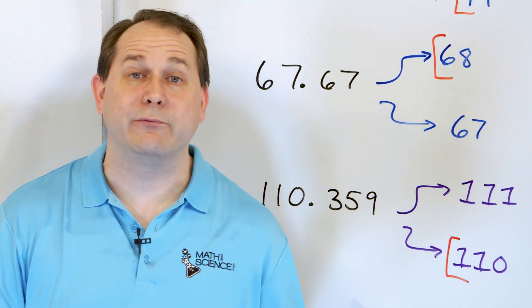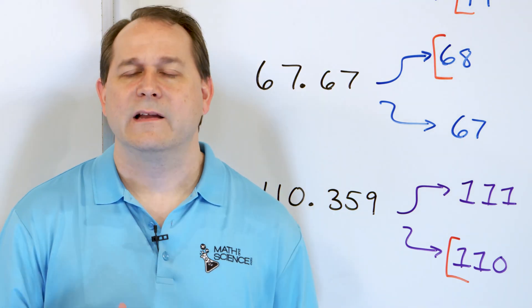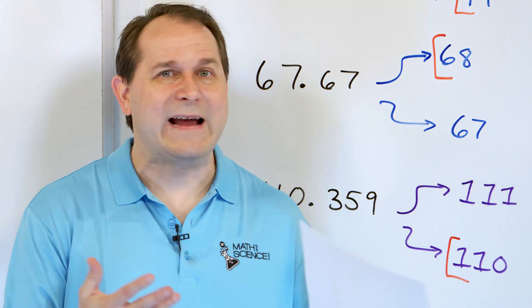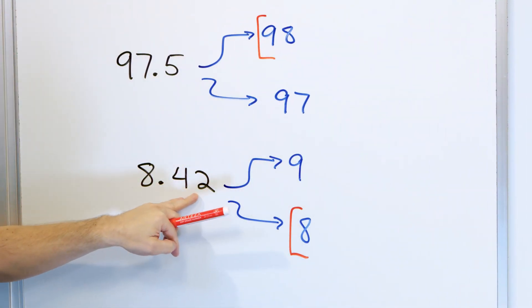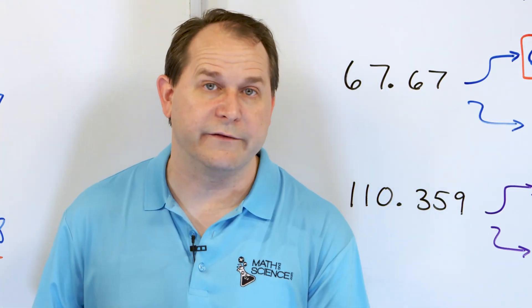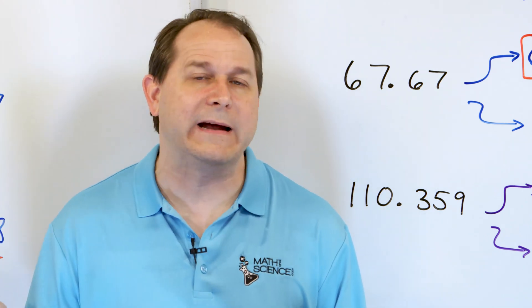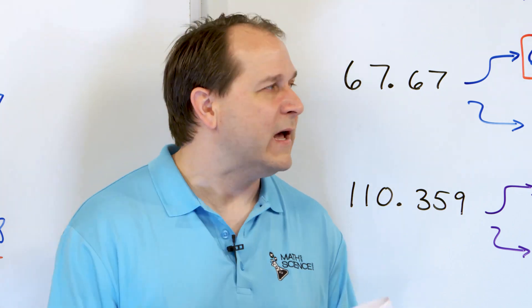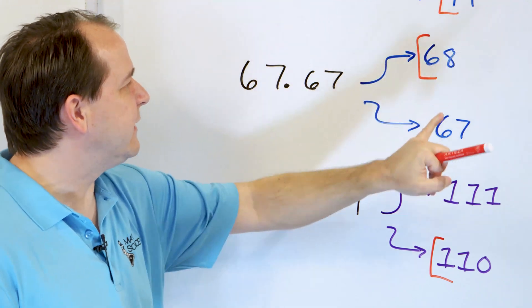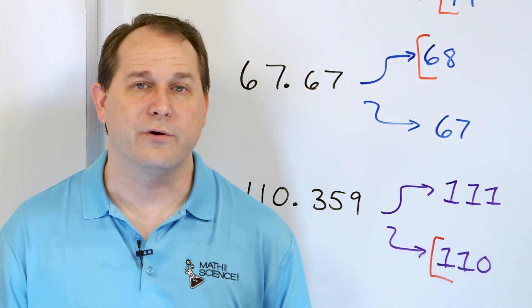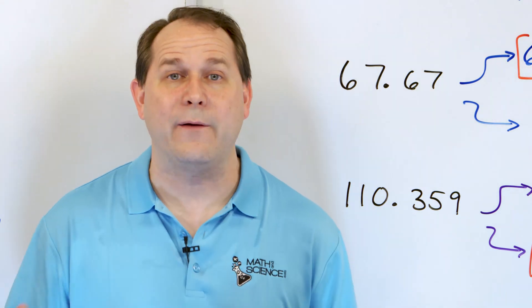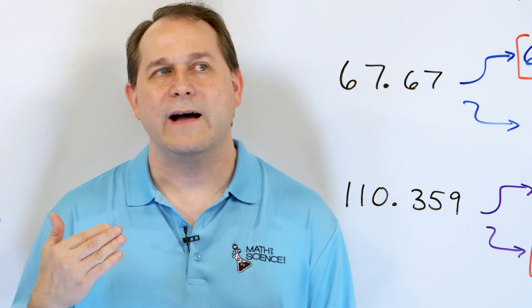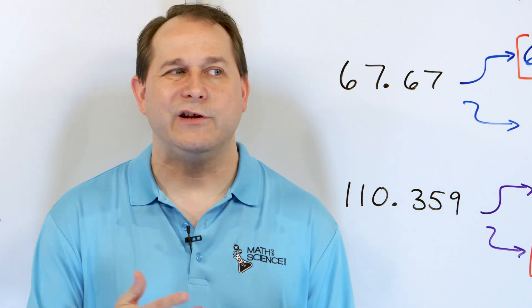Why do we care about rounding numbers? Let's say you're in the grocery store trying to buy a bunch of stuff — maybe something costs $67.67 and another item costs $8.42. The whole number is the number of dollars, and what comes past the decimal is the cents. It can be difficult to add all those numbers if you just want an idea of how much you need in your pocket. So you can round to the nearest whole number — $99, $68, $110 — and add them much faster.